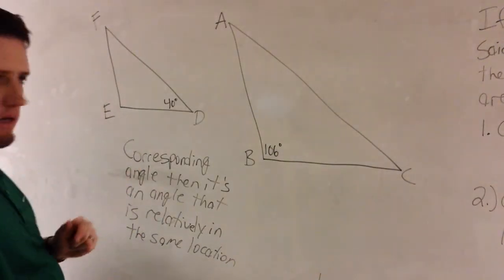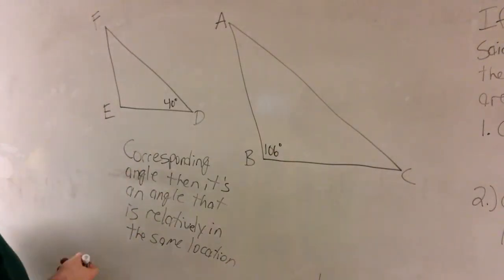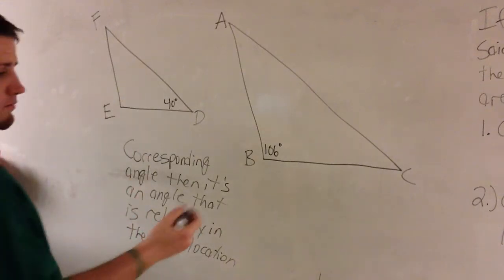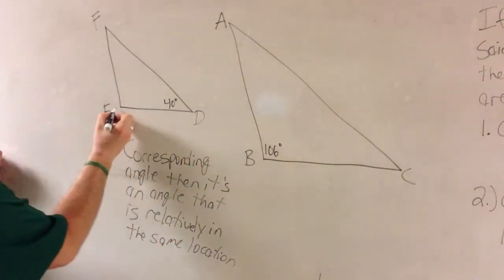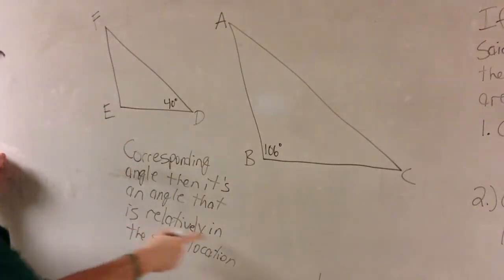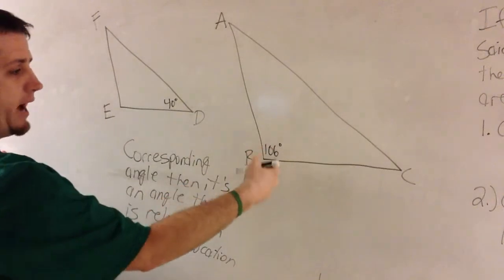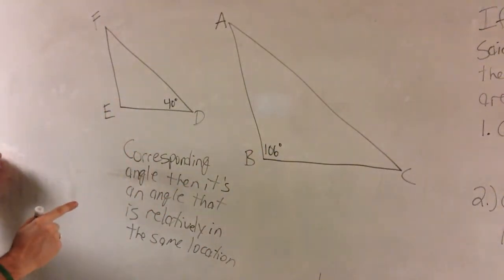Okay, so it's pretty simple to see that if you're looking for a corresponding angle, B corresponds with E because it's relatively in the same location. Okay, B is the bottom angle that's big. That's the bottom angle that's big. I mean, that angle's not big, is it?